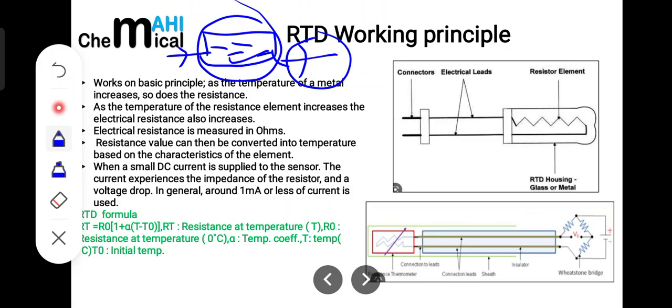But the proportion in which this resistance increases varies from metal to metal. It can be made more clear from this formula: RT equals R0 times 1 plus alpha times T minus T0, where RT is the resistance at a particular temperature, R0 is resistance at 0 degrees centigrade, alpha is the temperature coefficient, T is the temperature at which we want to measure the resistance, and T0 is the initial temperature.